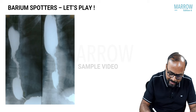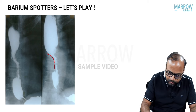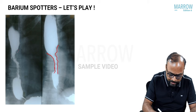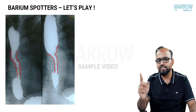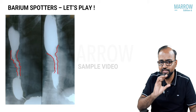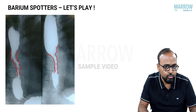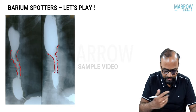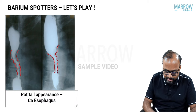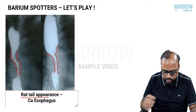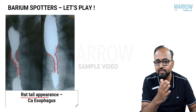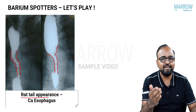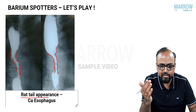Whereas if you see an abrupt narrowing with mucosal irregularity — a short segment abrupt narrowing with marked mucosal irregularity — that is because there is a mass along the wall of the esophagus with an irregular mucosal surface. This is called the rat tail appearance of CA esophagus. For exams: bird's beak sign is achalasia cardia; rat tail appearance is CA esophagus.